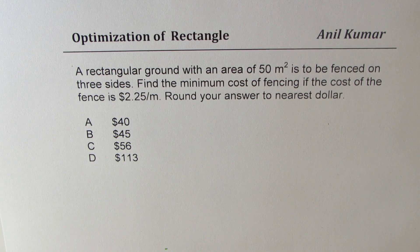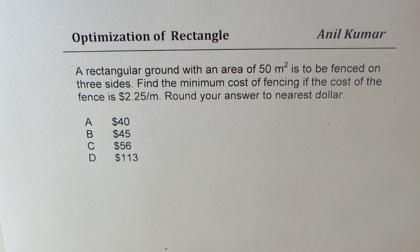A rectangular ground with an area of 50 meters squared is to be fenced on three sides. Find the minimum cost of fencing if the cost of fence is $2.25 per meter.